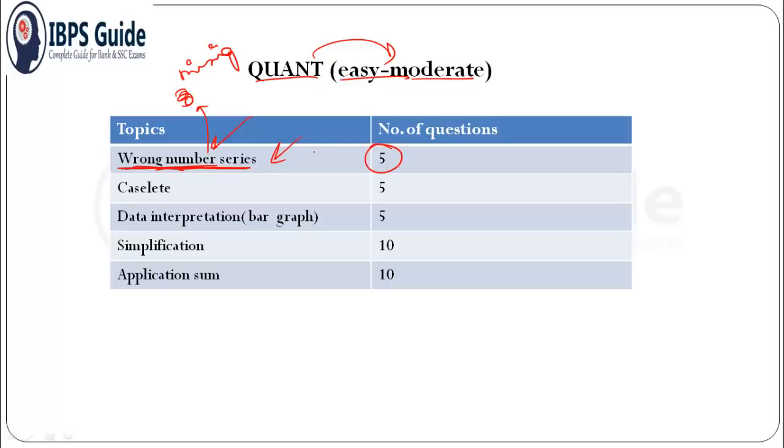It was not of that tough level, but generally students think missing is easier compared to wrong. So wrong number series was introduced in the fourth shift. They also introduced caselet - five questions. Data interpretation with bar graph - five questions. Simplification - ten questions of easy level.